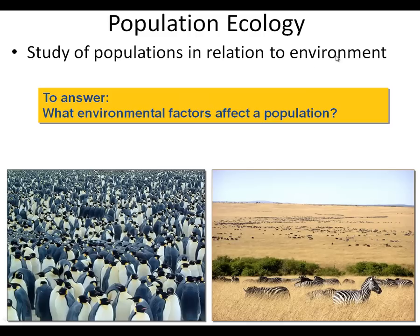Population ecology — we study populations because we actually want to know how they relate to their environment, how they survive, what's successful, what's not successful. We can talk about the emperor penguin — very large population — or we can talk about zebras, along with populations of other organisms. You can see populations of grass, populations of trees. It's not just an animal population we're dealing with. But basically, how the environmental factors affect the population, whether they be biotic or abiotic.